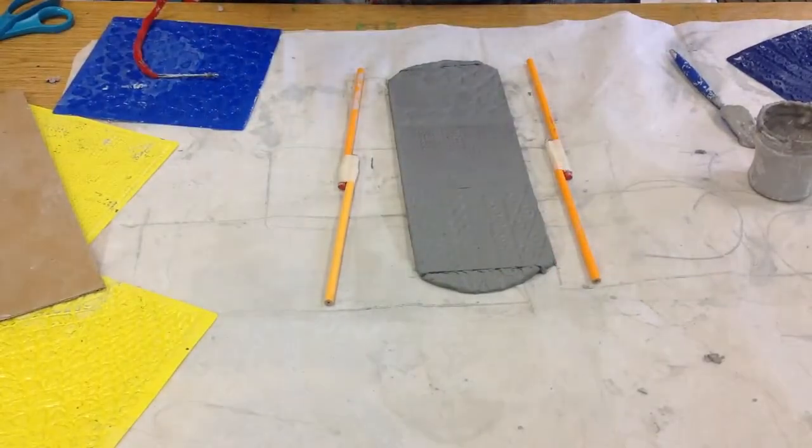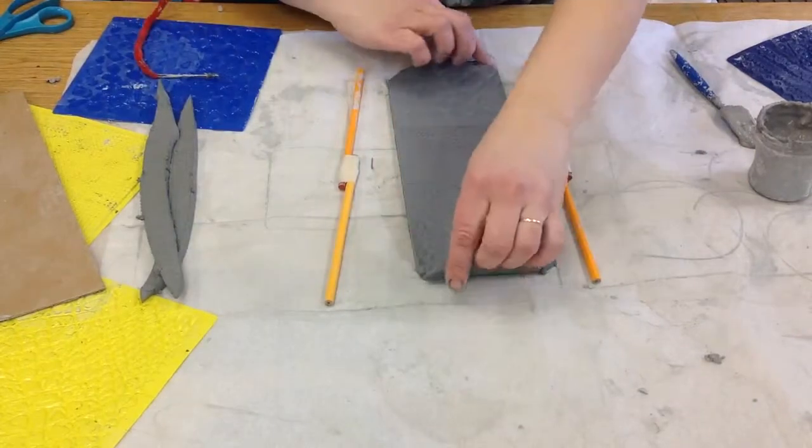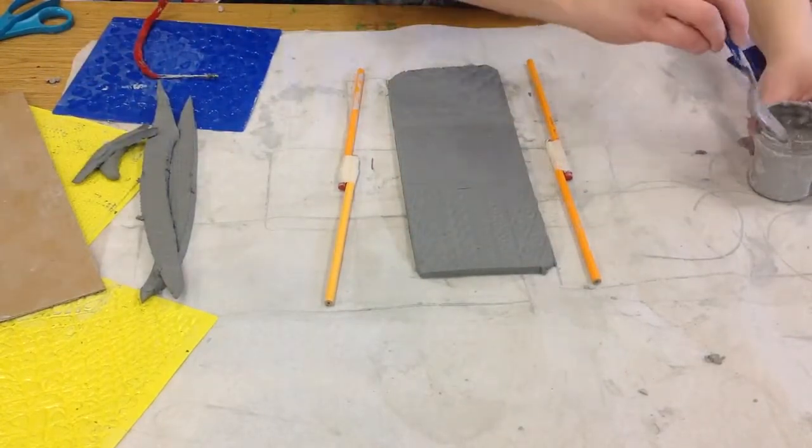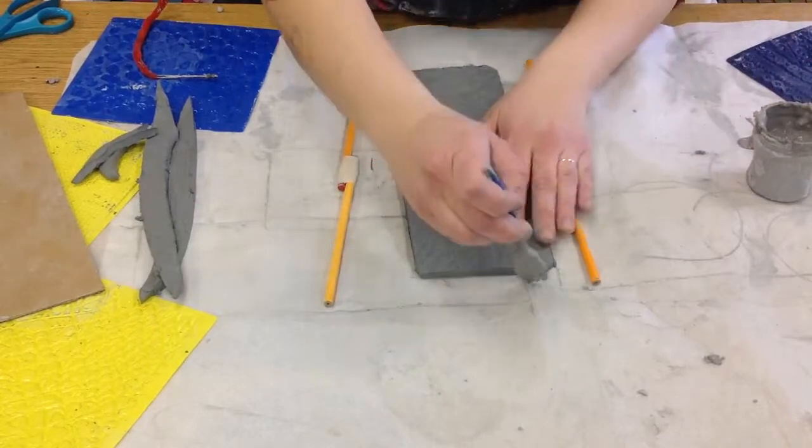Cut it to size. Save those for later. And then we need to slip and score. So we're going to use this fork.